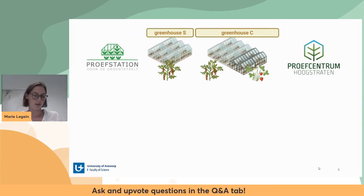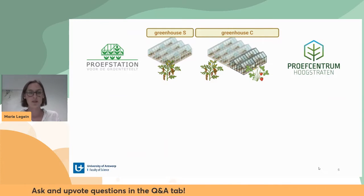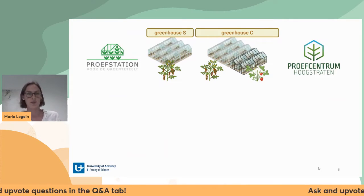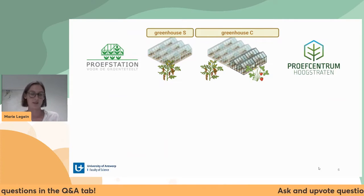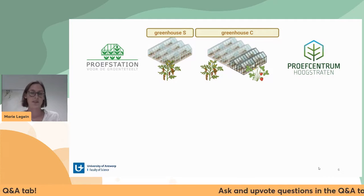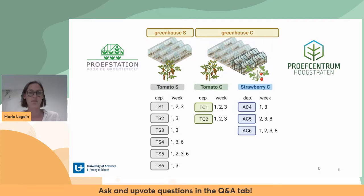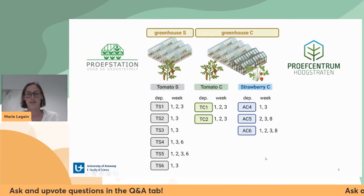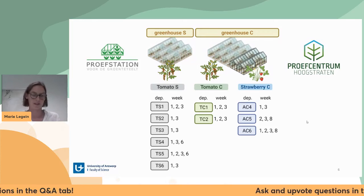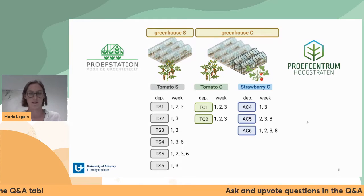I sampled two research greenhouses, abbreviated as greenhouse S and greenhouse C. These were subdivided into different departments, and I sampled over the course of eight weeks, making this an observational study.